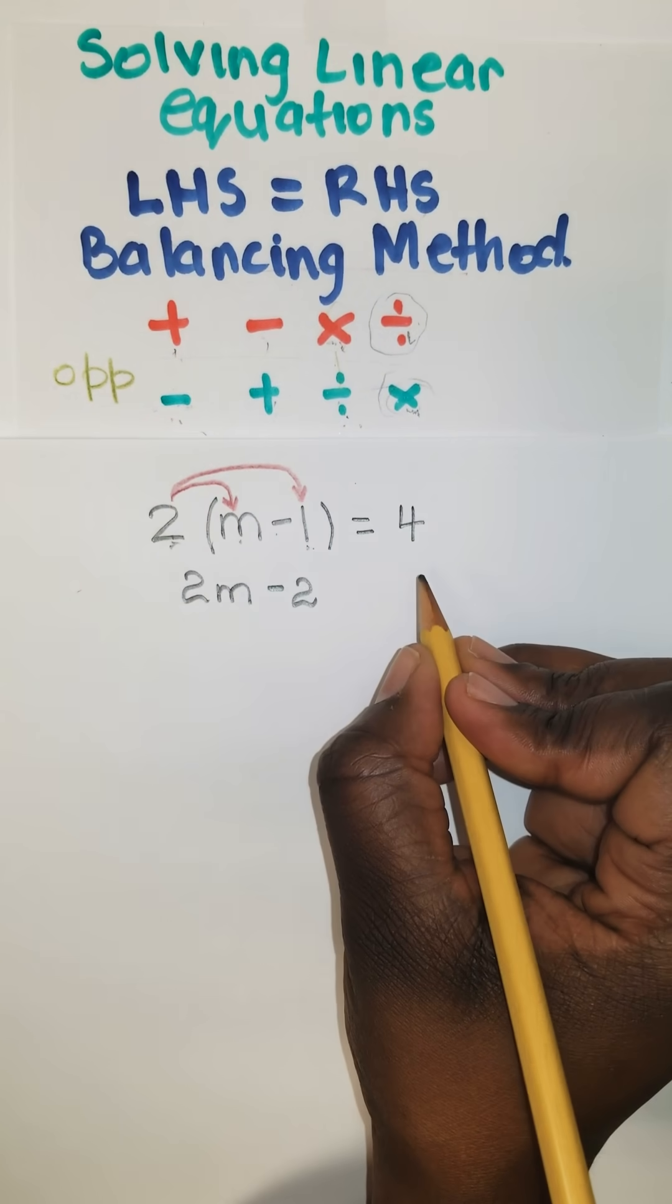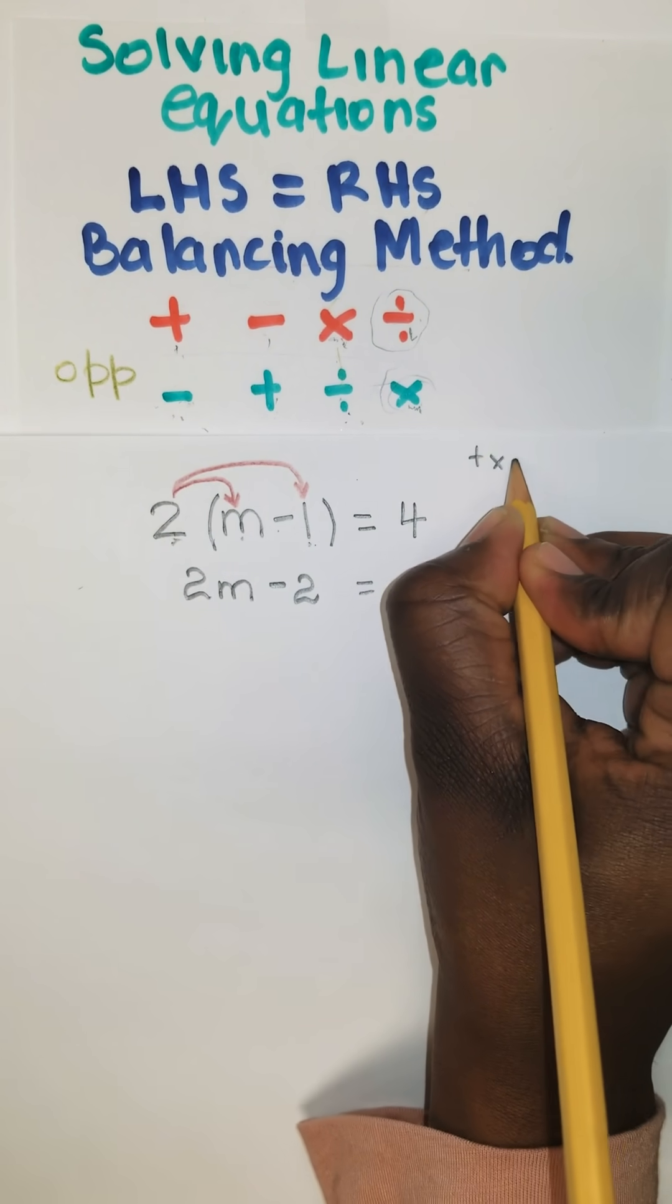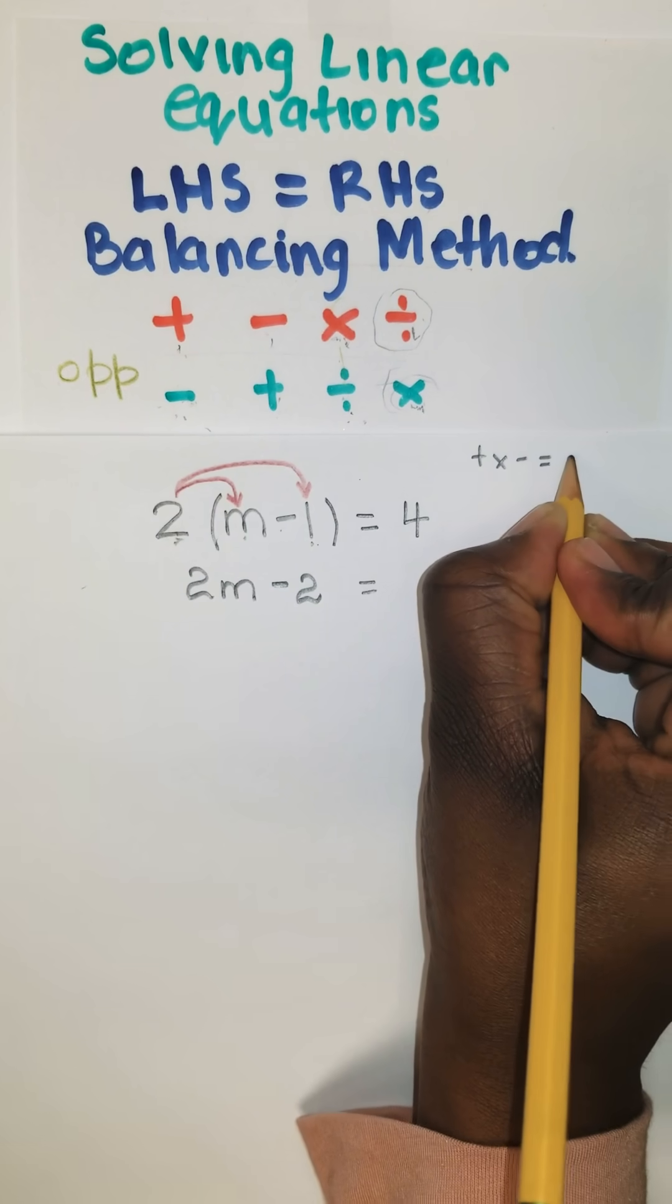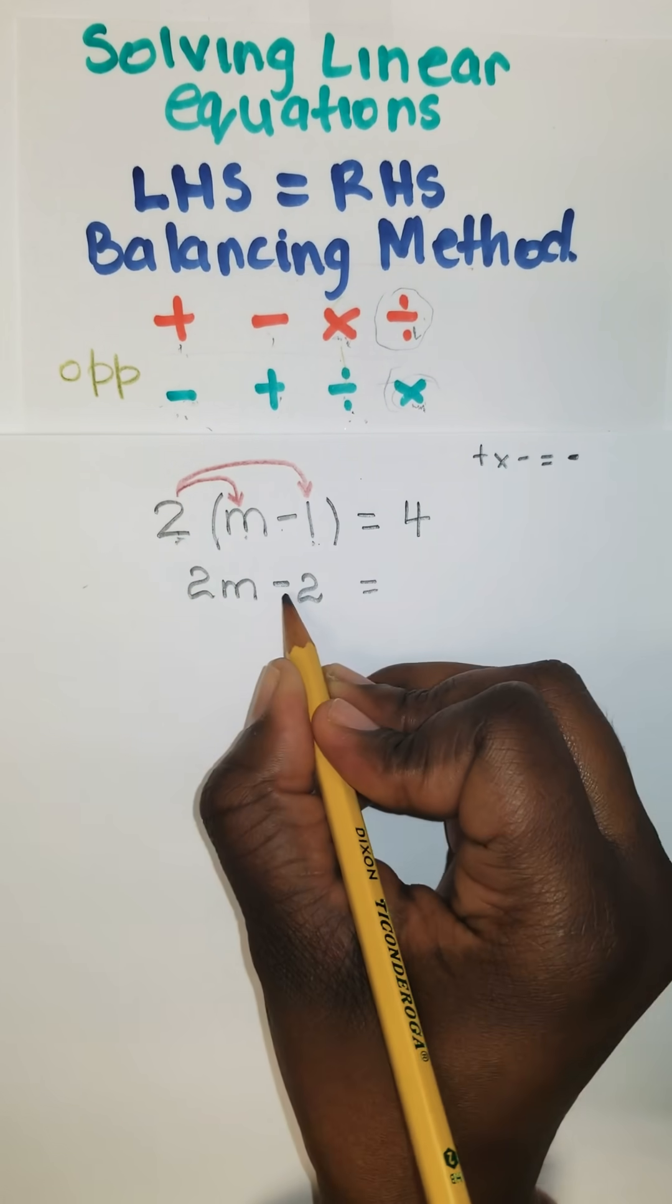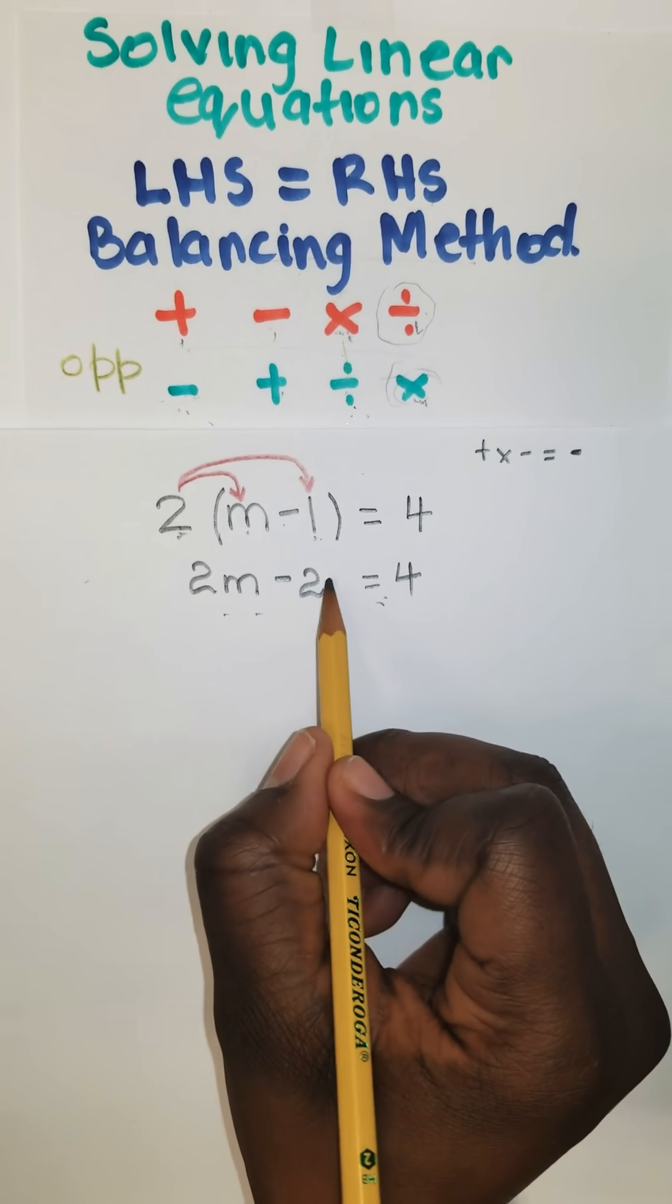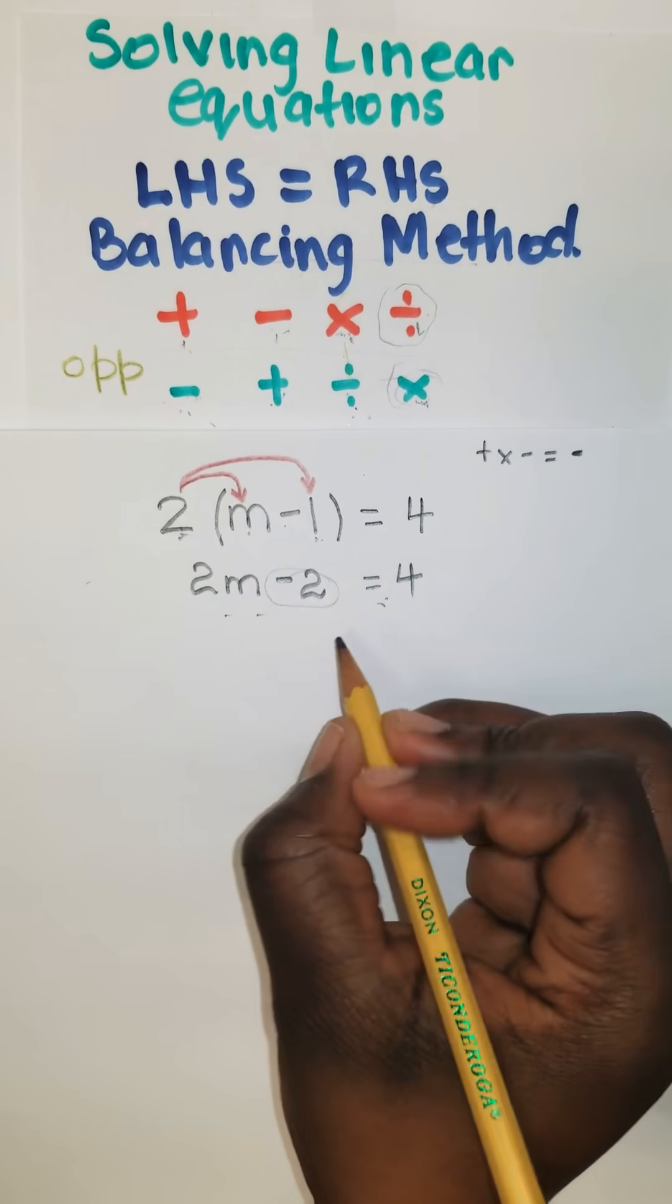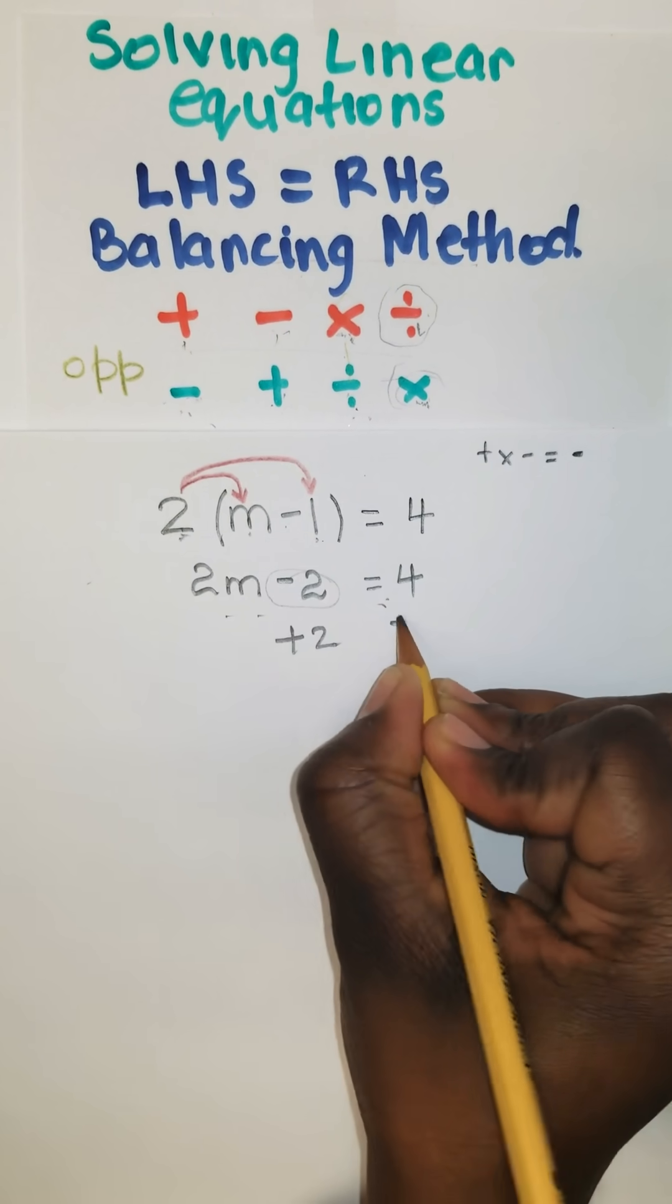Remember the rules of integer that says a positive times a negative is equal to a negative. So it's equal to 4. Let's simplify this part. This 2 is basically subtracting, so we do the opposite by addition. So we're going to add 2 to both sides.